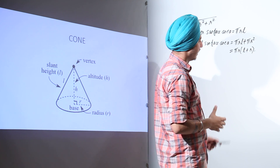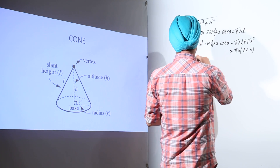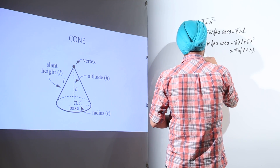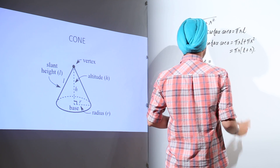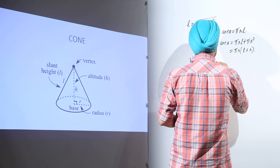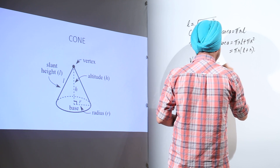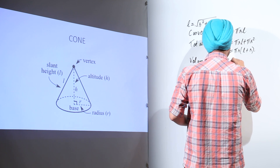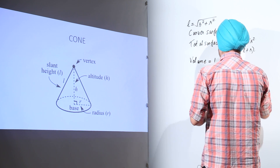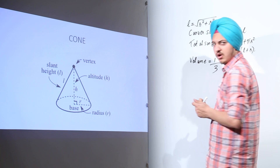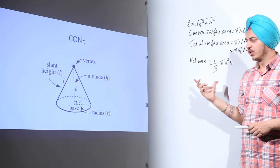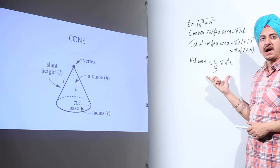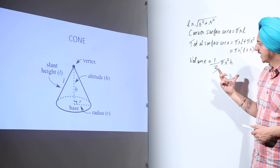Now the volume of this cone. The volume of a cone is equal to one-third π R squared H.